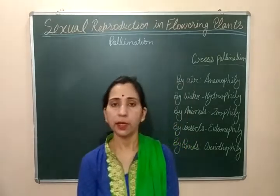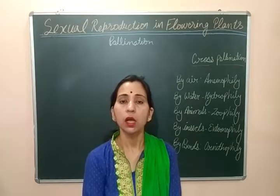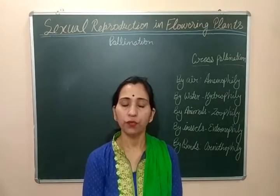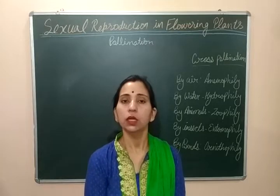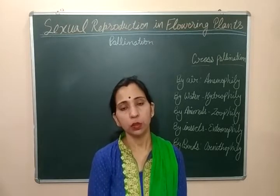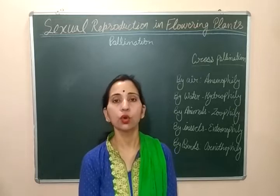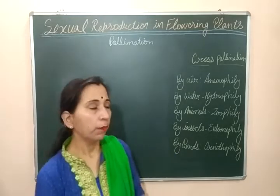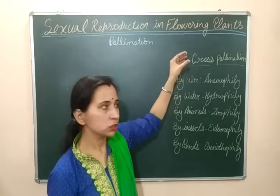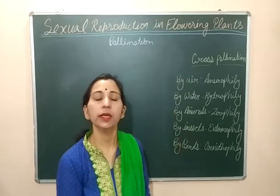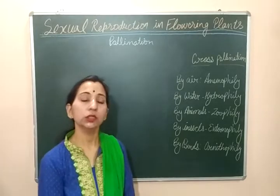Cross pollination, as you know, is the process by which the pollen grains from the anther of one plant or one flower reach the stigma of another flower on another plant. That process is known as cross pollination. For supporting cross pollination, some different agents are required.